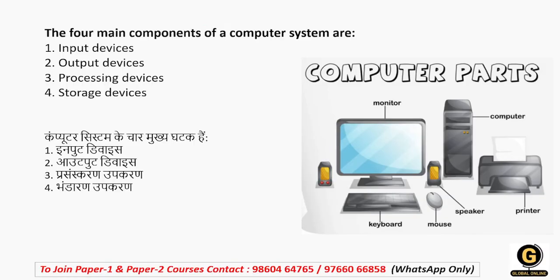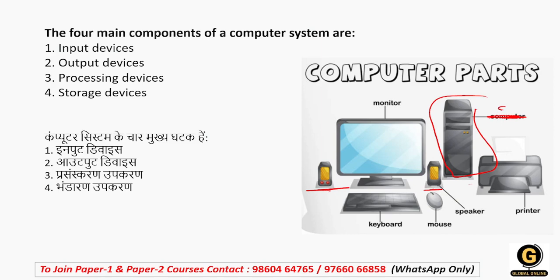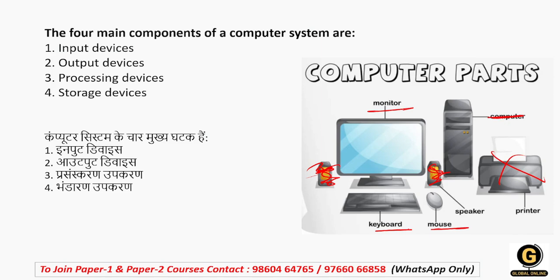अब हमारा अगला topic है main four components of computer system। Computer अगर आप पहली बार पढ़ रहे हो तो आपको जानना जरूरी है कि computer के main कौन कौन से parts होते हैं। इस तरह की जो screen आपके सामने आती है ये होता है monitor। Keyboard, mouse — mouse भी दो तरह के होते हैं: wired और wireless। फिर हमारे पास speakers हैं और यहाँ है CPU। Printer और speakers को add करना या नहीं करना आपकी requirement है, लेकिन keyboard, mouse, monitor और CPU compulsory होते हैं।